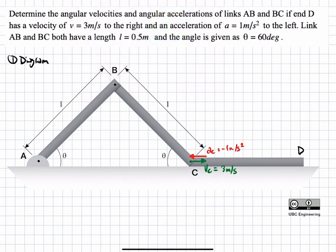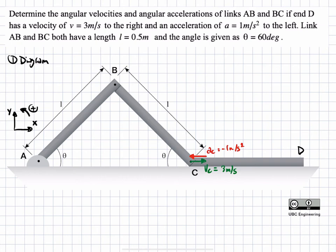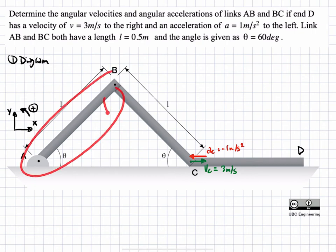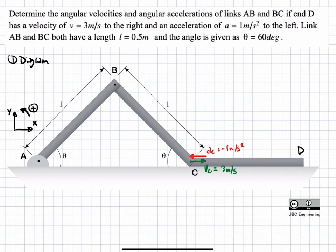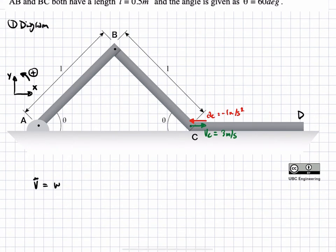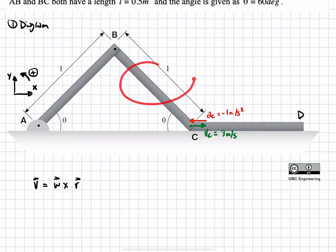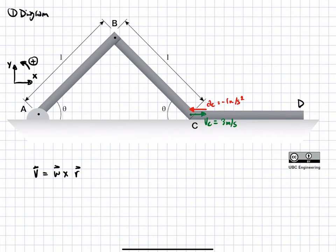Our coordinate system is centered at A — X is to the right positive, Y up positive, and rotation is positive counterclockwise. So essentially, since we're given the velocity, we can scrap the sliding bar and assume the system has two arms, where point C has the following velocity and acceleration. We're going to use the time derivative technique to solve for the angular velocities and accelerations of AB and BC.